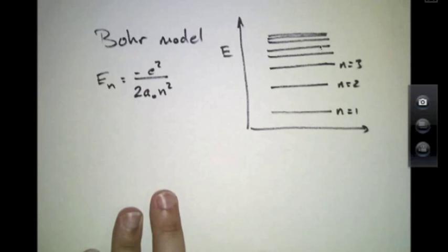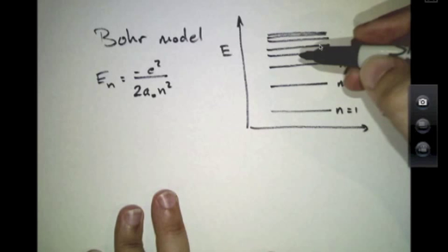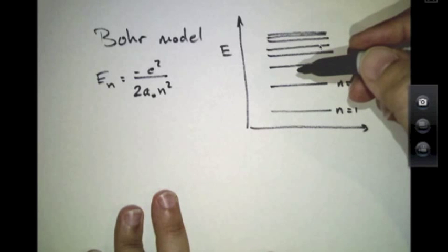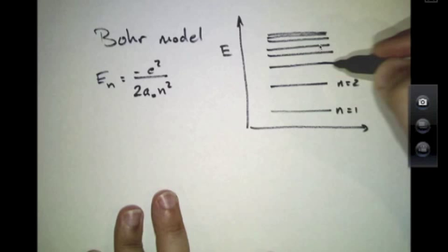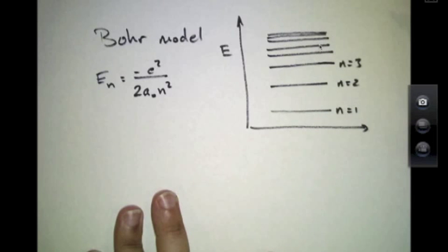And then the reason we see the characteristic pattern of the Balmer series is because there are transitions that involve dropping electrons originally sitting up here at n equals 3 and dropping down to n equals 2.